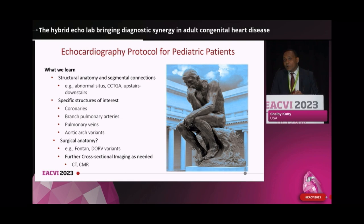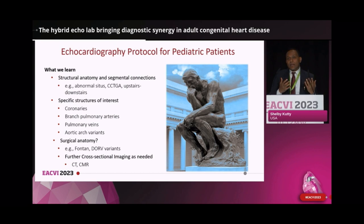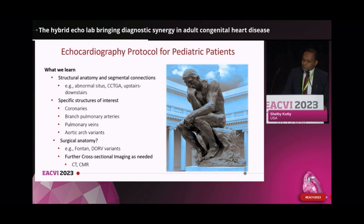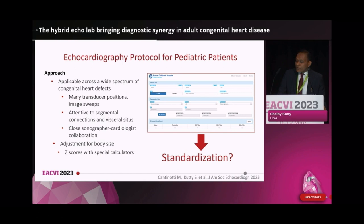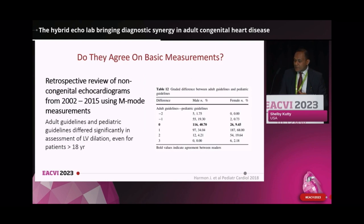We can evaluate specific structures that are likely to be abnormal, like the coronaries, the pulmonary veins, the branch pulmonary arteries, and the aortic arch. We can also visualize surgically relevant anatomy that may have a bearing on how to best repair a specific variant of a double outlet right ventricle, or how a Fontan palliation can be constructed. Pediatric imagers must always remain alert to what an echocardiogram has left unanswered, then recognize the need to pursue definitive anatomic diagnosis with further tomographic imaging — MRI or CT. In summary, the pediatric approach is applicable across a wide spectrum of anomalies, requires many transducer positions and image sweeps, and close collaboration between the cardiologist and sonographers in complex cases. Quantitative echo is a special challenge in pediatrics because of broad body size variability, requiring measurements to be expressed relative to body size, so Z-score calculators have been developed to support this task.